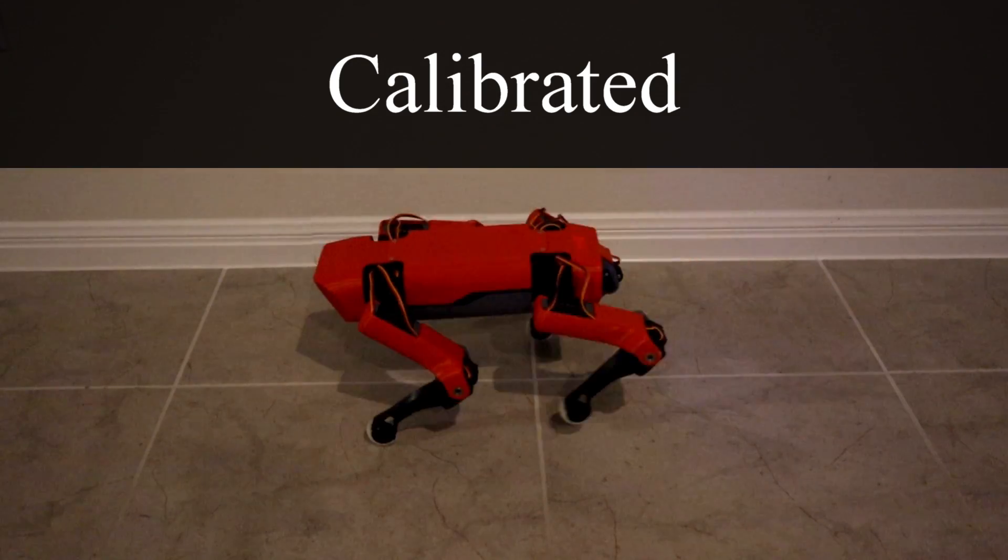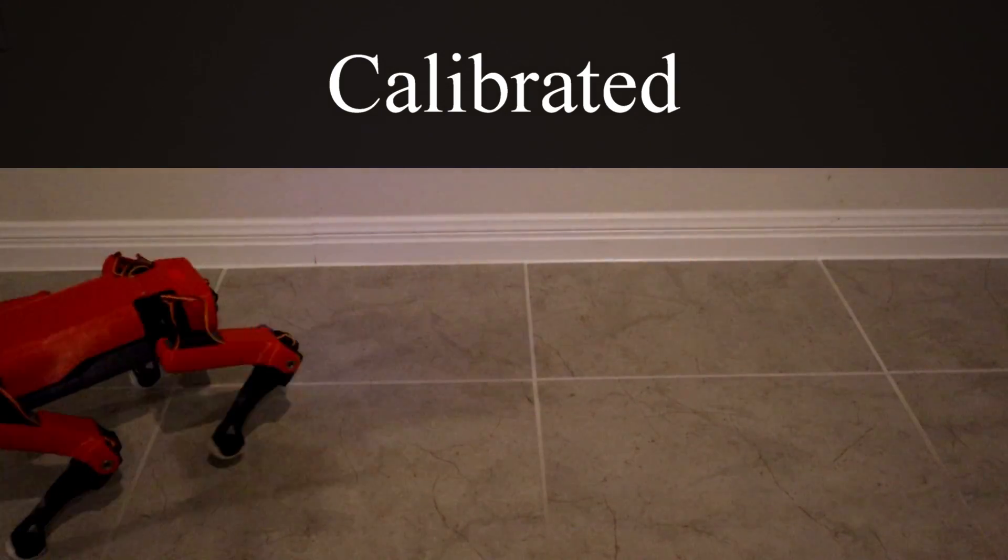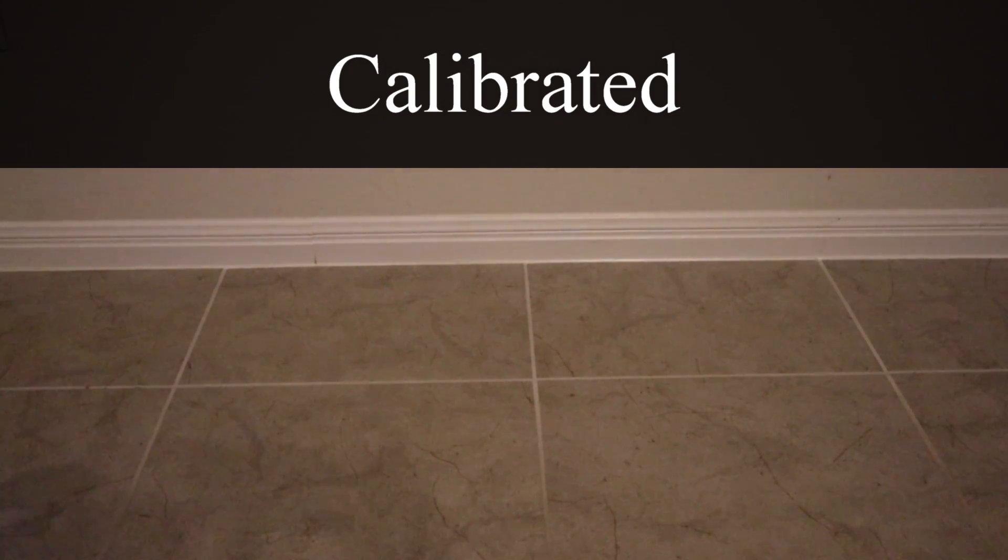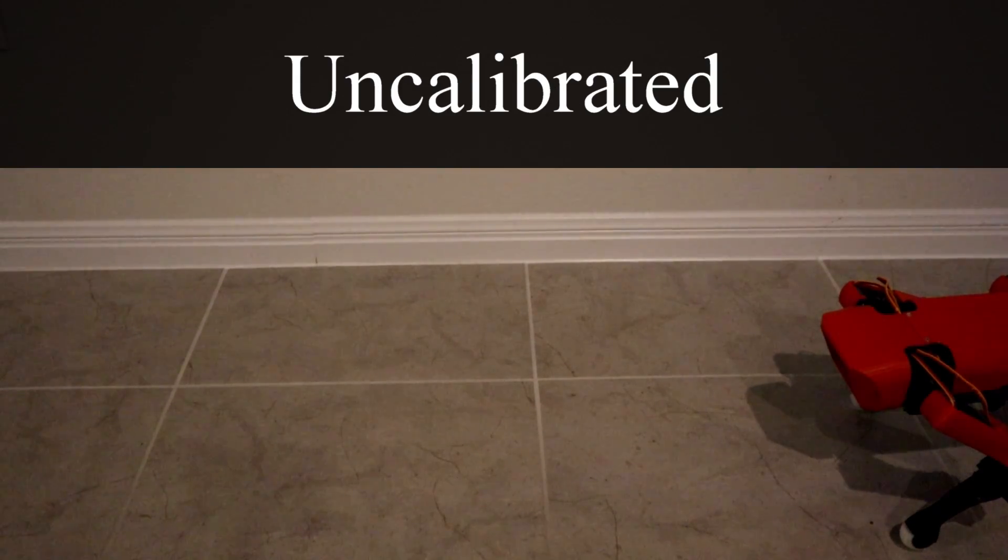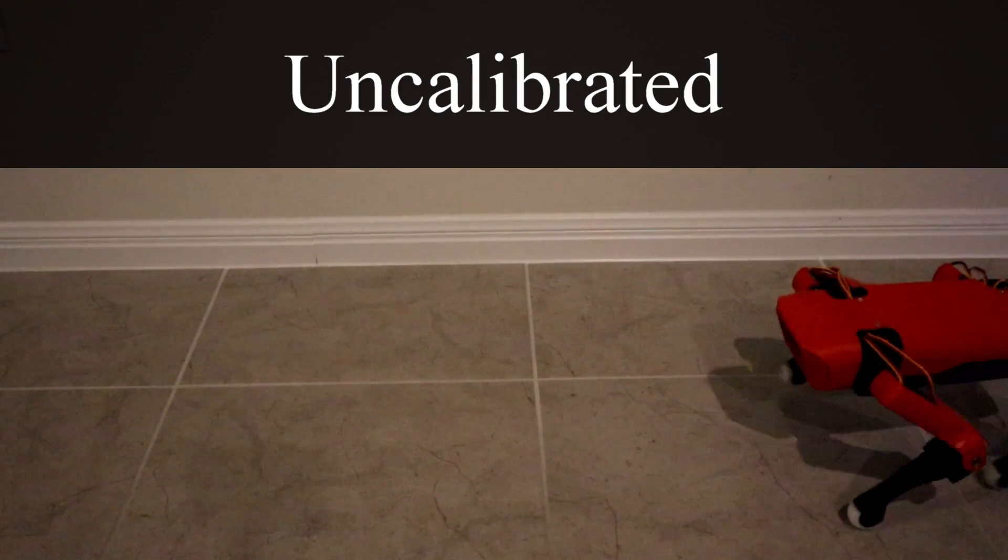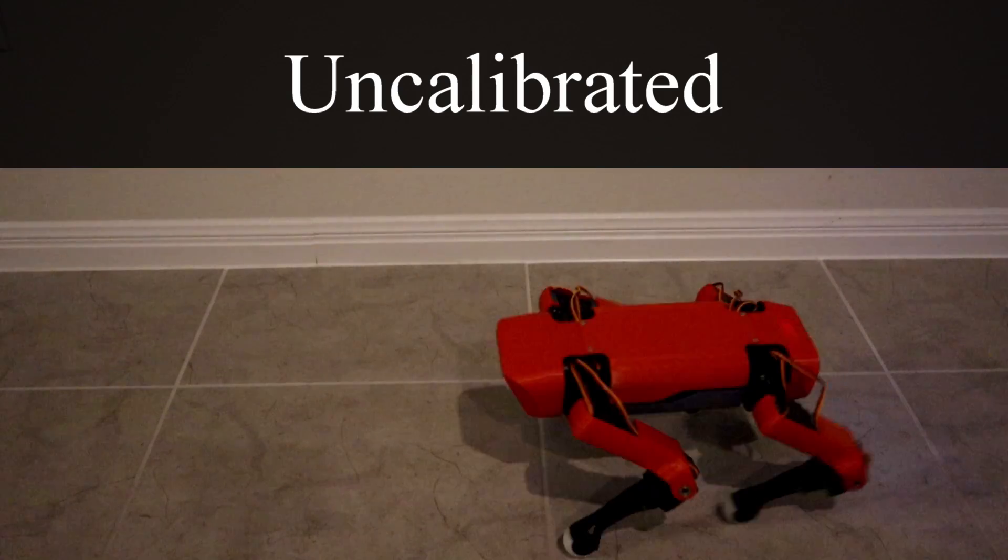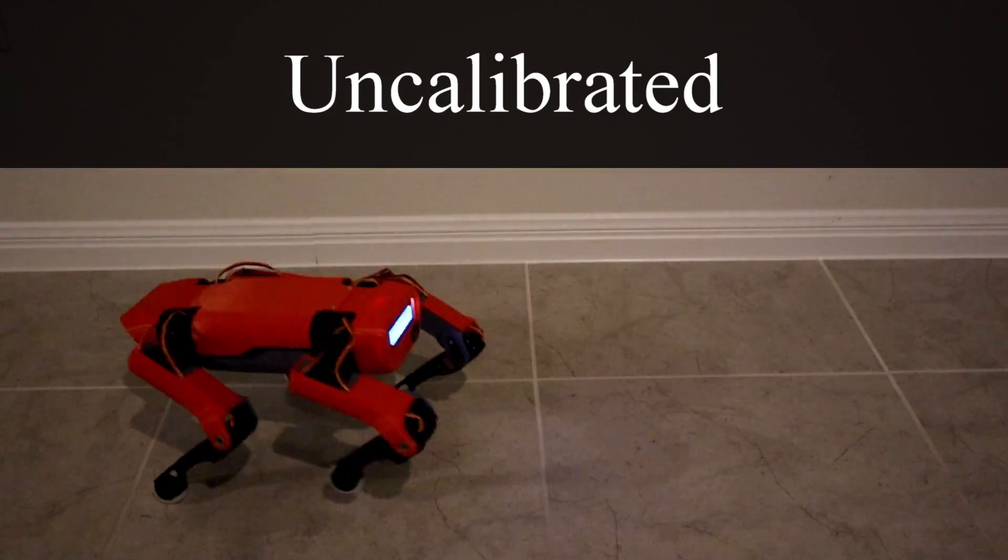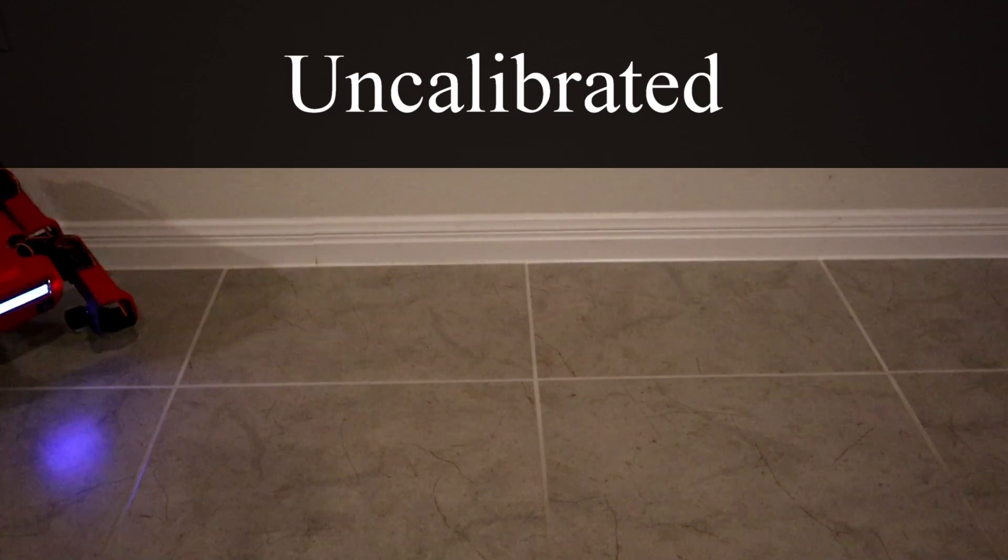With the servos properly calibrated, it can move generally in a straight line with little trouble. Compared to uncalibrated servos, where it's struggling to maintain balance and is having trouble walking forward. It keeps popping back up onto its hind legs preventing its front legs from making contact with the ground.